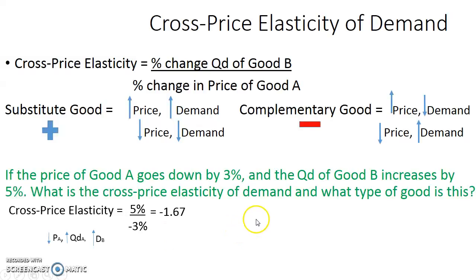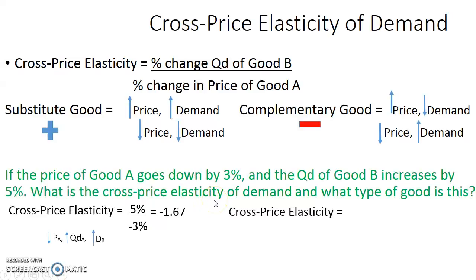If you prefer to memorize the sign rule rather than using the logical train approach: the quantity demanded of good B increased (positive numerator) and the price of good A went down (negative denominator), so a positive divided by a negative gives a negative — confirming a complementary good.